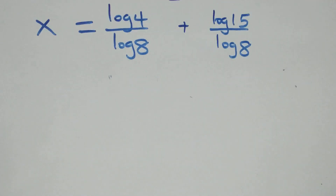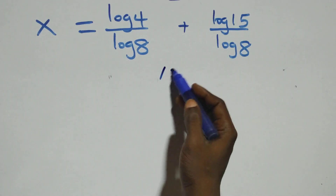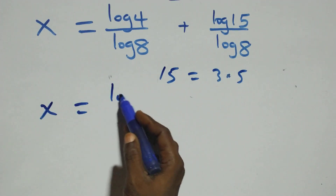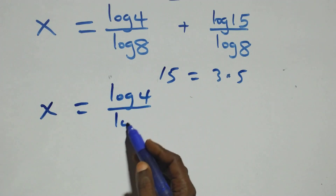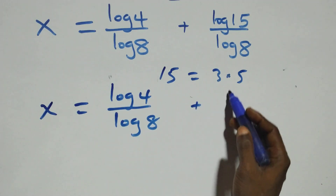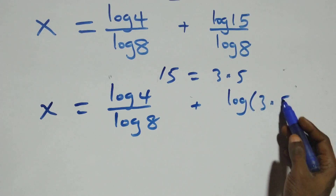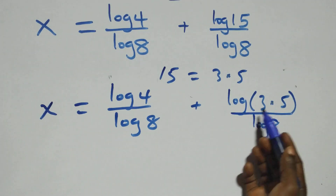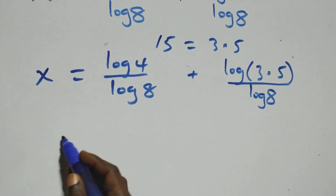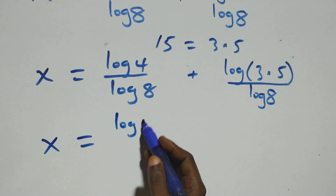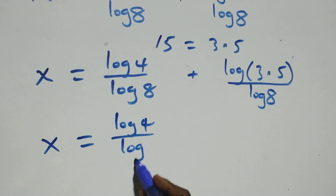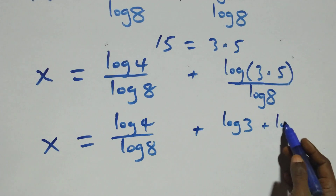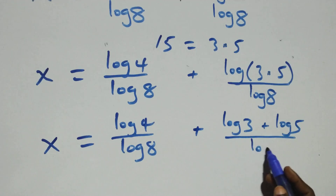Next step here, we can rewrite fifteen as three times five. That is, here we have x equals to log four over log eight plus log of three times five over log eight. This also follows the log product rule, and we can write what we have as x equals to log four over log eight plus log three plus log five, over log eight.